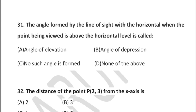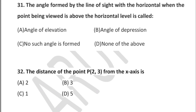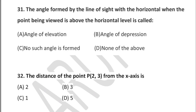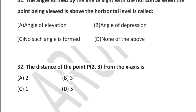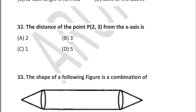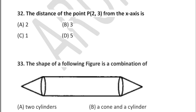Question 32: the distance of the point P(2, 3) from the x-axis is — option A: 2, option B: 3, option C: 1, option D: 5. Students, similar questions have been solved in my previous video — do check it out.